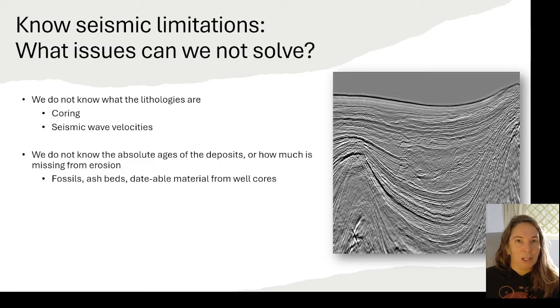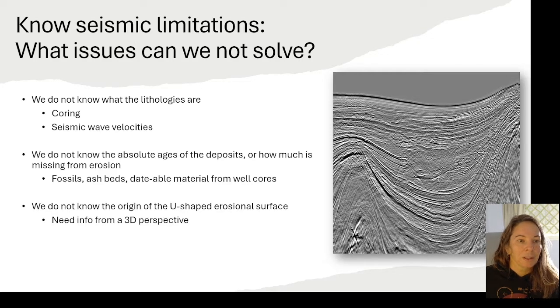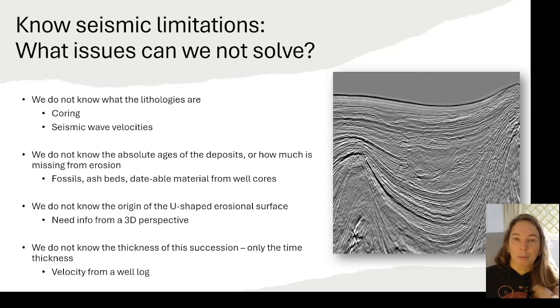If we have fossils or ash beds that we can date from cores then that helps us narrow down our seismic interpretation more. In this case we don't even know the origin of this u-shaped erosional surface that I'm showing on the right-hand side because we're just looking at it in 2D. So if we really want to get an idea of the shape and what's going on we have to look at things in three dimension too. And then we also don't know the thickness of these different successions of reflectors and depositional packages because seismic data is recorded initially only in time. So we need a velocity in order to relate it and recalculate it back to depth to actually know the thickness.